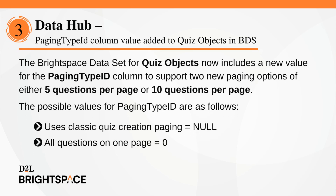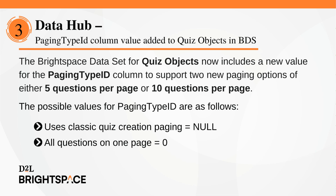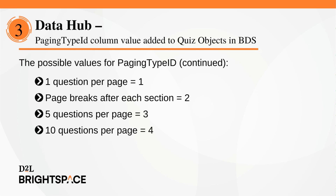The Brightspace dataset for Quiz Objects now includes a new value for the Paging Type ID column to support two new paging options of either 5 questions per page or 10 questions per page. The possible values for Paging Type ID are: Uses Classic Quiz Creation Paging equals null; All questions on one page equals zero; One question per page equals one; Page breaks after each section equals two; Five questions per page equals three; and Ten questions per page equals four.